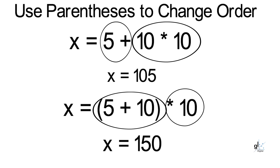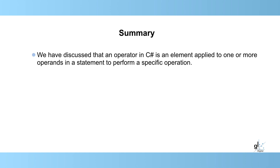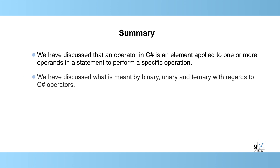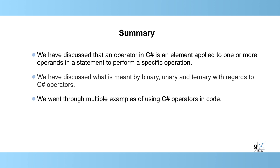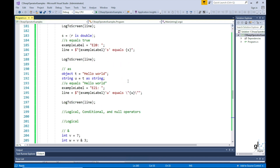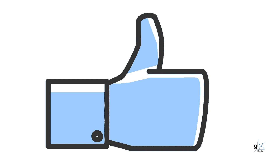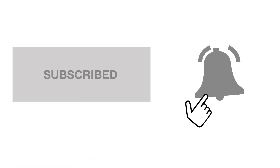One thing we have not covered in this tutorial is operator overloading — this will be discussed in an upcoming tutorial. We have discussed that operators in C-sharp are elements applied to one or more operands in a statement to perform a specific operation. We discussed what is meant by binary, unary, and ternary with regards to C-sharp operators, and went through multiple examples of using C-sharp operators in code. We then discussed the significance of precedence, associativity, and parentheses regarding multiple operators in a statement. Please see the description below for supplementary information, and all code and related documentation can be downloaded from GitHub repositories. Please hit the thumbs up icon if you gained value from this tutorial, please subscribe, and hit the bell icon to be notified of future content. I look forward to reading your comments. Thank you.